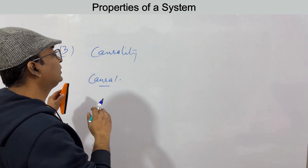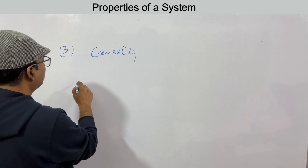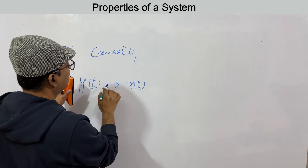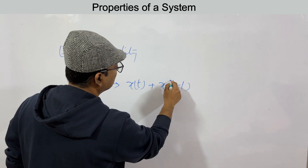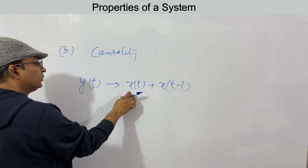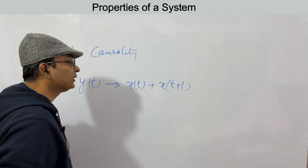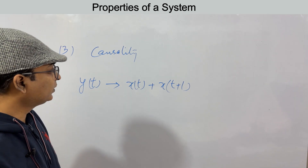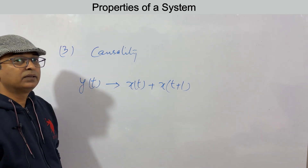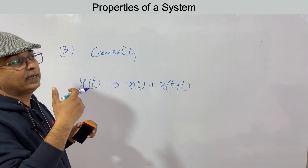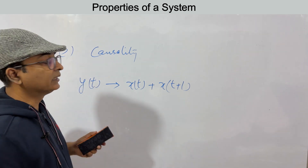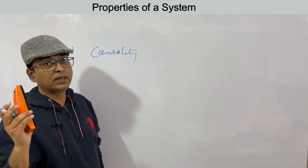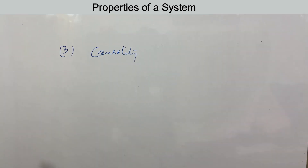A corollary of causality: the system does not anticipate future values. For a causal system, y(t) can depend on x(t) and x(t−1) — present and previous values — but not on x(t+1). Non-causal systems anticipate future input values. A causal system depends only on present and earlier input values.